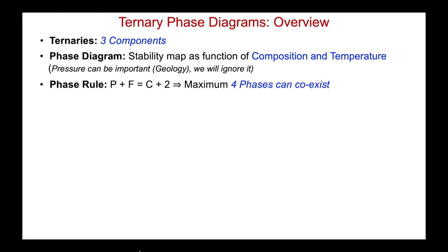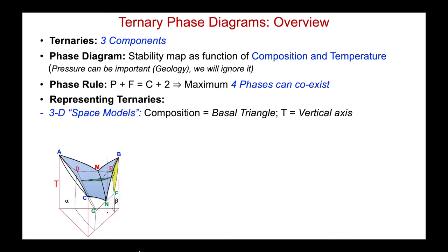In that case, the phase rule will tell us that for a three-component system, a maximum of four phases can coexist when we ignore pressure. When we look at representing ternary systems, we will cover 3D space models where the composition is represented on a basal triangle and temperature as the vertical axis. Because these are 3D constructs, it can take time to get a sense of the dimensionality of the phenomena we run into.